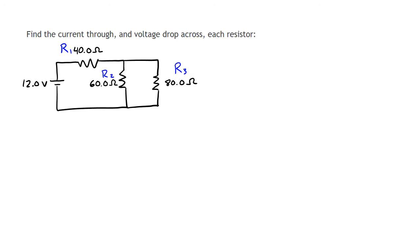The first thing we want to do in a problem like this is find the total resistance of the circuit. Knowing all the resistances, we almost always want to find total resistance first, because that's going to allow us to find the current flowing out of the battery. So to start, we're going to have to begin combining these resistors.